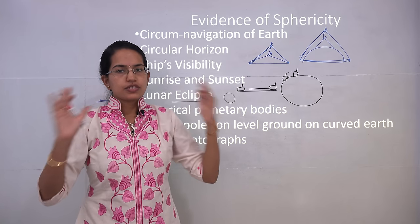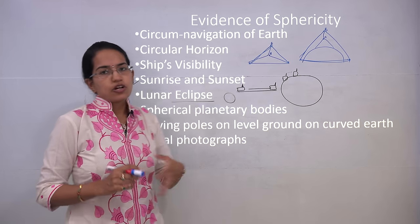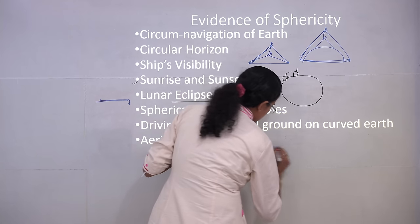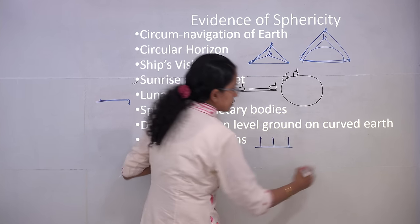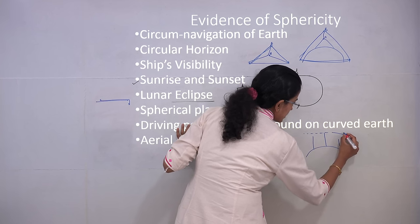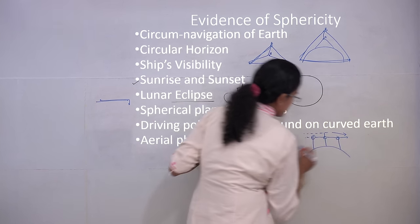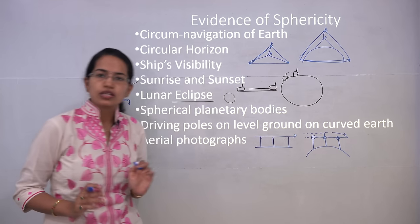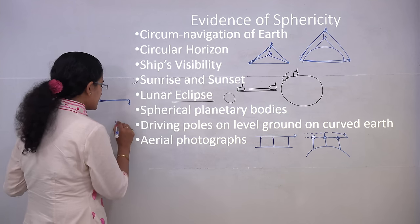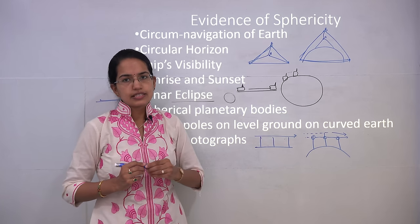Since all other planetary bodies we have explored are spherical, Earth must be spherical too. Driving poles into level ground demonstrates curvature: on a curved surface with a certain line of sight, you can see only one pole, while on a flat surface all three poles are always visible. This curvature correction is nearly eight inches per mile. Finally, aerial photographs confirm the sphericity of the Earth.